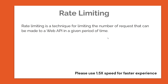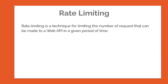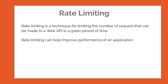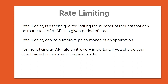Rate limiting is a technique for limiting the number of requests that can be made to a web API in a given period of time. Rate limiting can help improve performance of an application, but the main reason why a lot of people use rate limiting is for monetizing an API. If you charge your client based on the number of requests made, you want to make sure that beyond that number of requests, you apply rate limiting.